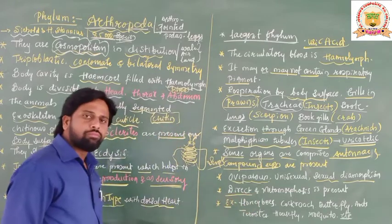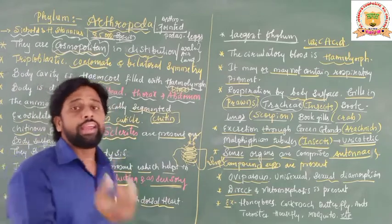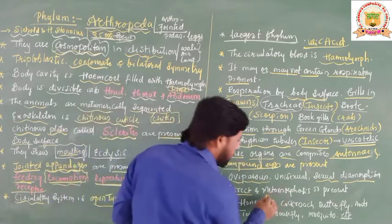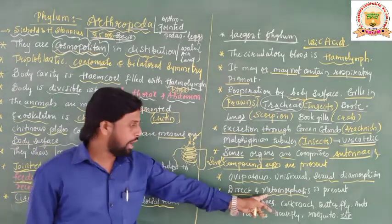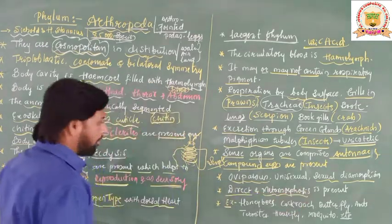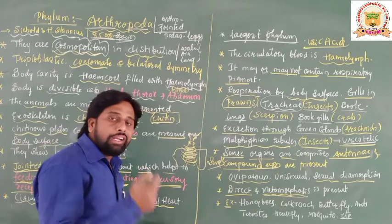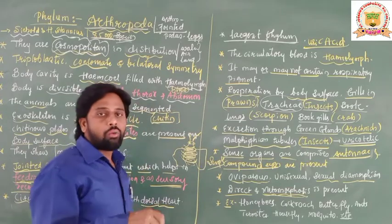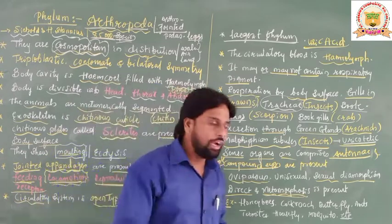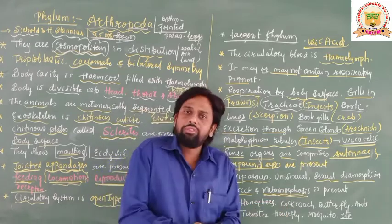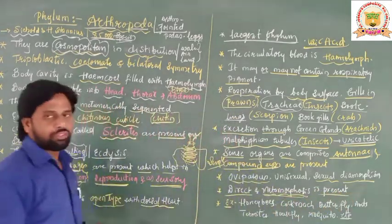Arthropoda can show direct development — directly giving birth to young ones. Some of them show metamorphosis, which is a form of indirect development where the larva undergoes several changes to become an adult. The presence of a larval stage indicates indirect development, and this metamorphosis is also present in several arthropods.